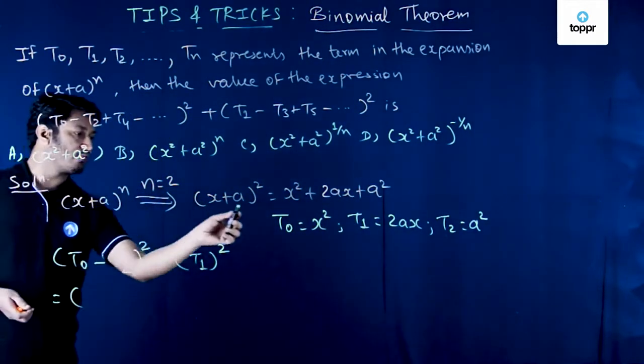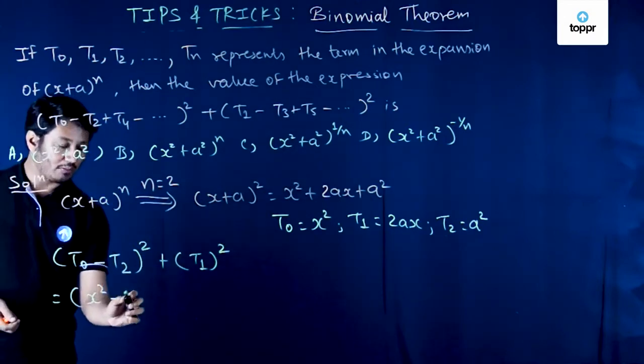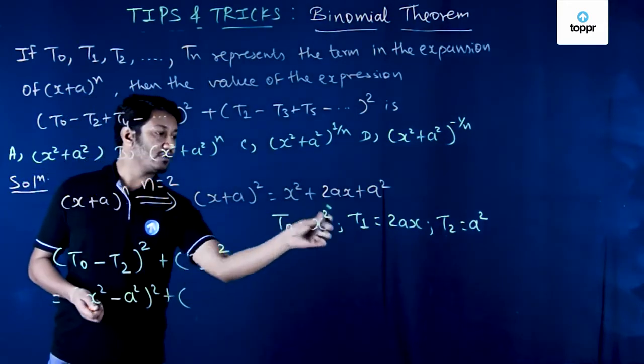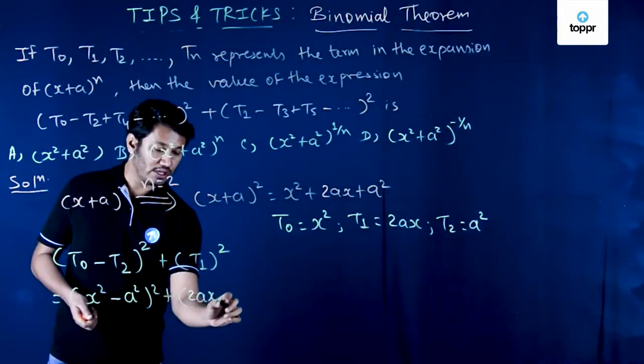This becomes further t0 we have got as x^2 minus t2 is nothing but a^2, this is further squared, and t1 we have is 2ax squared.